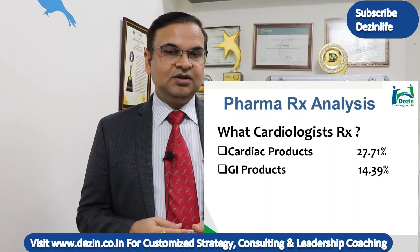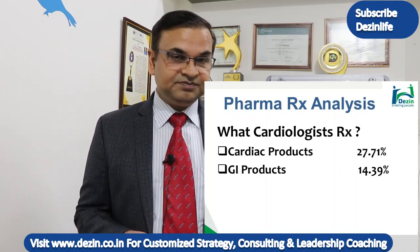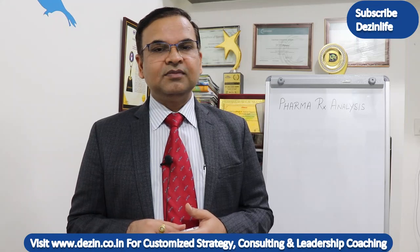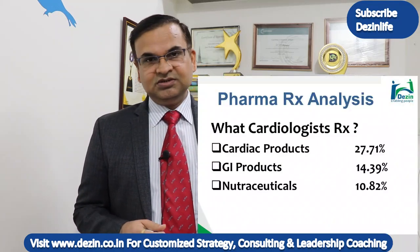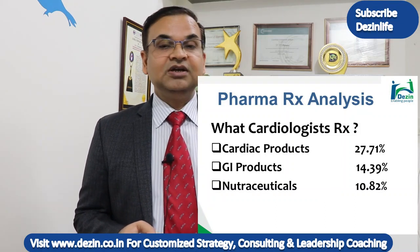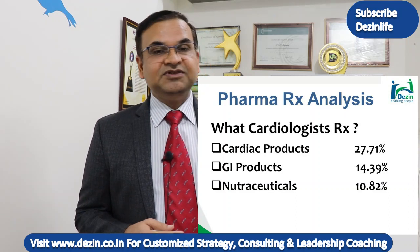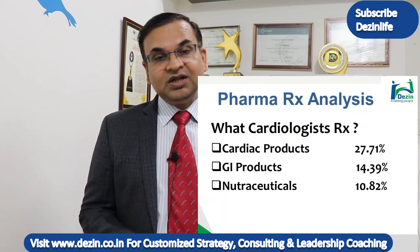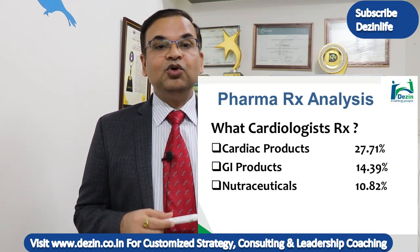General companies may be covering GI, but how many GI specialty divisions are covering cardiologists? One needs to see — they are such huge prescribers. Whether they are writing PPIs or prokinetics, when you look at the third largest prescribing segment from cardiologists, it is nutraceuticals at 10.82% of cardiologist prescriptions. Companies with cardiac, diabetic, or CNS divisions may be promoting some nutraceuticals, but certain companies promoting exclusive nutraceuticals may not be covering cardiologists. Being specialists, their prescriptions have longevity and value.